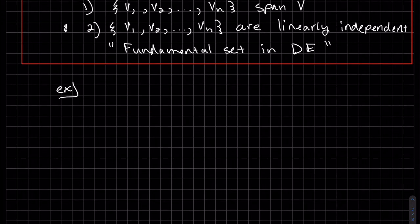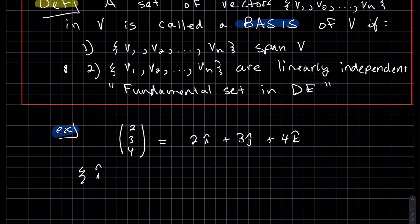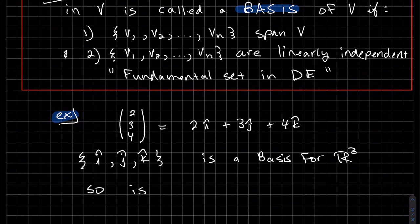Let's look at an example. We know the vector 2, 3, 4 in R3 can be written as a linear combination of i, j, and k. So the set i, j, and k is a basis for R3. So is T, N, and B in R3 because they are perpendicular to each other.